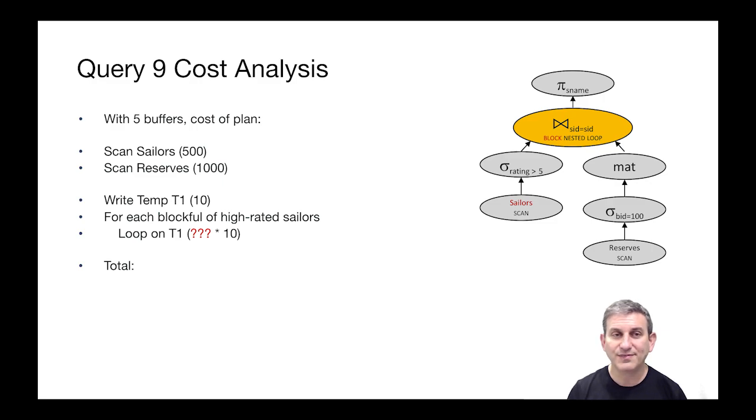We have five buffers for blocks. So we're going to use four of them at a time to do the scan of the inner relation. We're going to scan sailors. That's a cost of 500. And because we have a materialization on the right, we're going to scan reserves, which is a thousand and write it to a temp, which is going to be 10, because only one tenth of the tuples match the predicate.